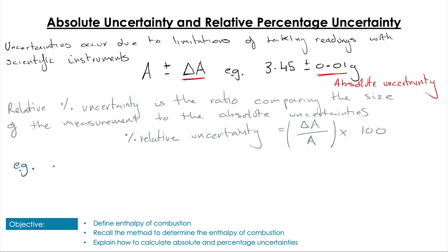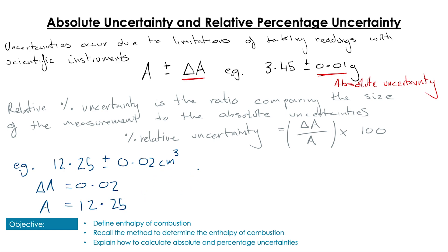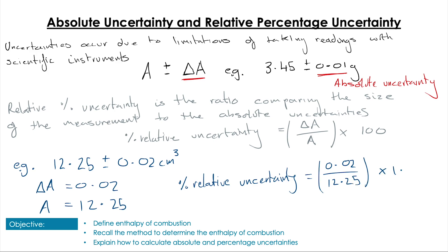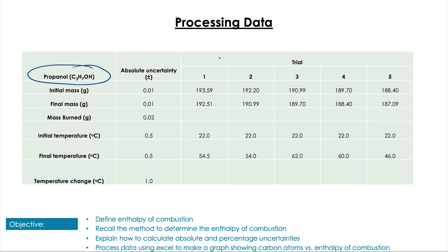Let's take an example measurement: 12.25 ± 0.02 cm³. The absolute uncertainty is 0.02 and the measurement is 12.25, so we plug that into our equation for relative percentage uncertainty: 0.02 divided by 12.25 all multiplied by 100, which gives 0.163%, and rounded to two significant figures that's 0.16%.